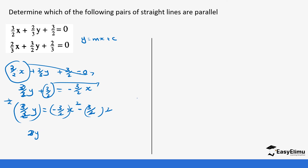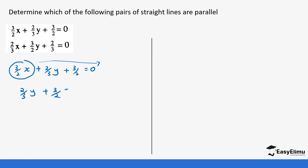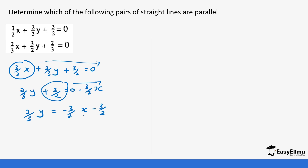Let's make some corrections. The first equation was (2/3)x + (2/3)y + (3/2) = 0. There's a tendency to make an error because the numbers are similar. So we move the x term to the other side: (2/3)y + (3/2) = -(3/2)x. Then we take the positive (3/2) to the other side as well, leaving us with (2/3)y = -(3/2)x - (3/2).